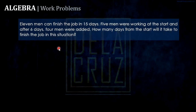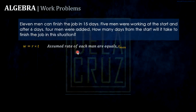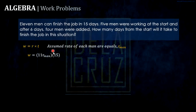We use work equals rate times time again. For this type of problem, we assume the rate of each man is equal — call it the rate of one man. Initially, one whole work equals the rate of eleven men times fifteen days, which gives us 165 times the rate of one man. That is the total work.